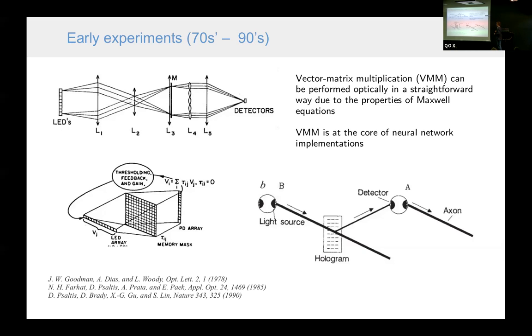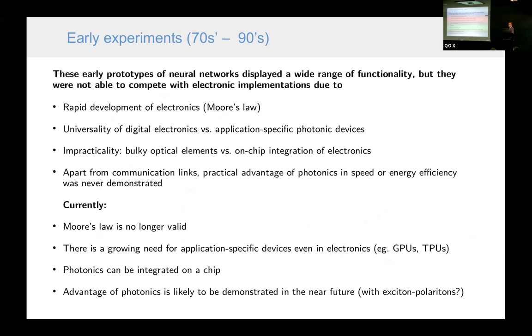For example, it is possible to realize vector matrix multiplication in a quite straightforward way by using the properties of Maxwell equation. If we have a number of light sources that represent a vector and a mask that represents the matrix that we want to multiply this vector with, then in a certain plane, if we use a certain optical system, we can obtain the result of the multiplication. It looks nice, but this functionality was quite wide. However, the systems were never able to actually find any application.